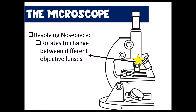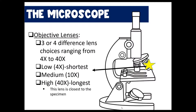The next part is the revolving nosepiece, and it's called a revolving nosepiece because it revolves. You can rotate it to manually change between your different objective lenses. Typically your microscopes have three objective lenses, though in this picture it only appears there are two because one is hiding. Typically you have three or four objective lenses ranging anywhere from 4x to 40x, which means 40 times the original size of the specimen.